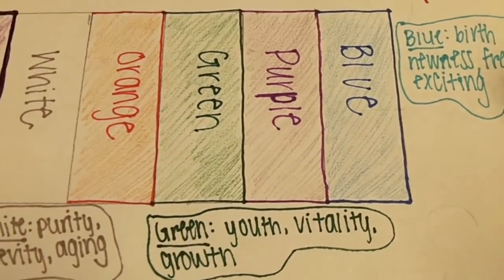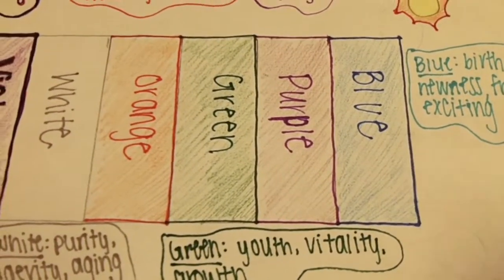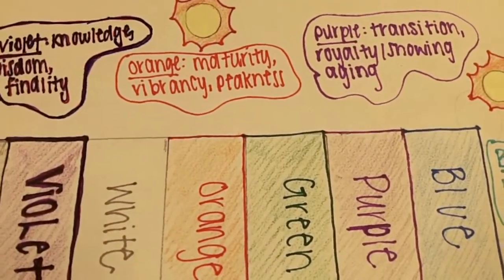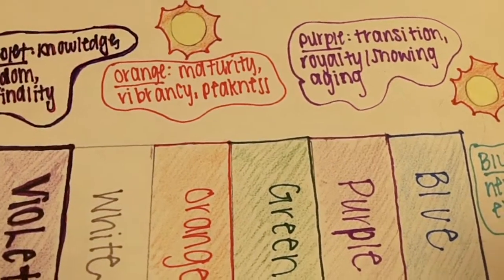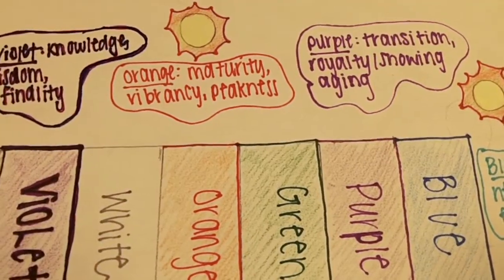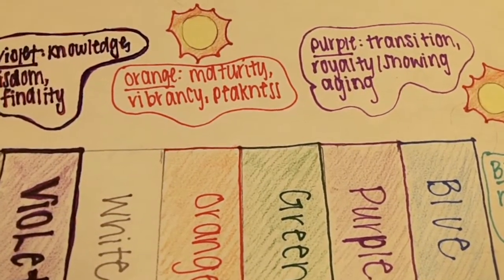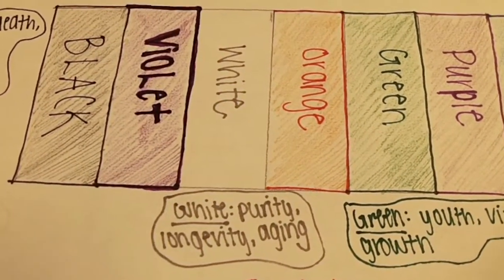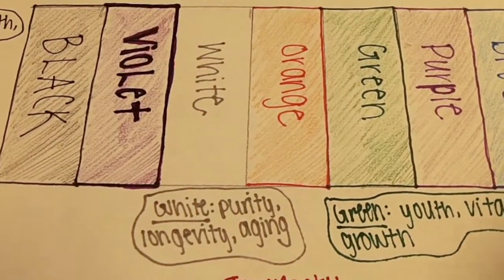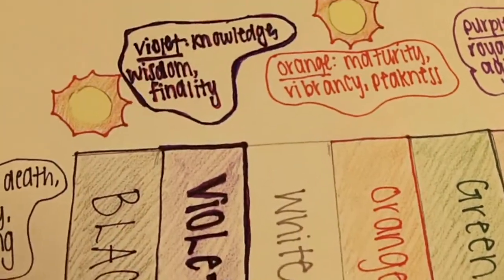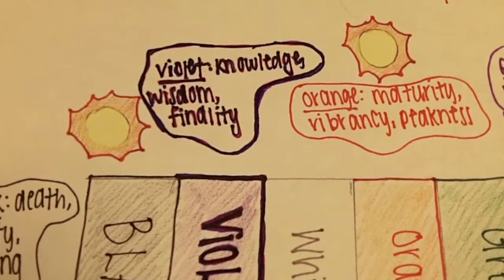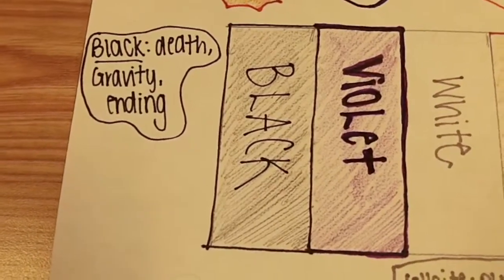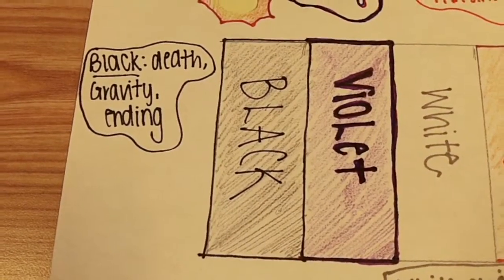We have green, which is generally a universal symbol of youth, vitality, and growing — springtime is generally associated with green, so the green room is one of the two rooms in the middle. Then we move on to orange, which is maturity, vibrancy, and peakness — it represents coming of age and is the other middle room of the hallway. Then white, which symbolizes purity, longevity, and aging — at this point in life someone would be an old man or old woman with white hair. Violet represents knowledge, wisdom, and finality — some sources say this is the eminence of death, knowing that death is upon us. And the black room, like I said, with red is very symbolic of death, gravity, and ending.